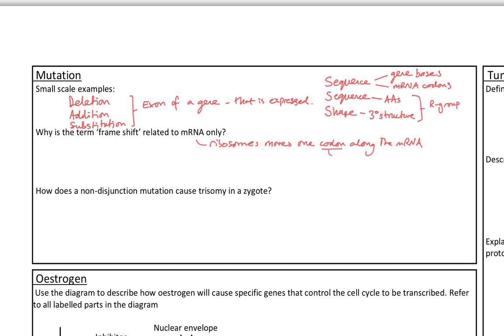I should have said at the start, actually, a mutation, let's just define it. This is a changing sequence of bases in the DNA, or a changing amount of DNA, changing the amount of DNA. That's why I broke it down to the small scale mutations, because they would do the first bit. There'd be a change of sequence of bases in the DNA.